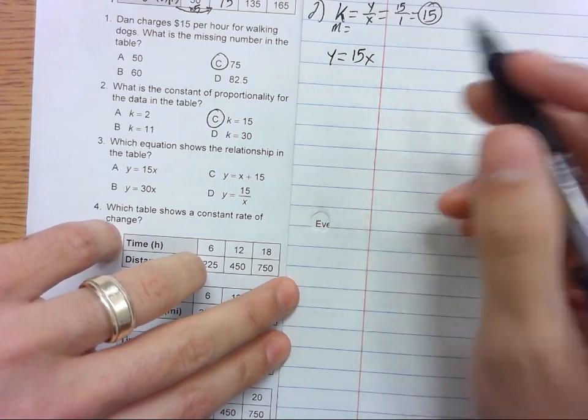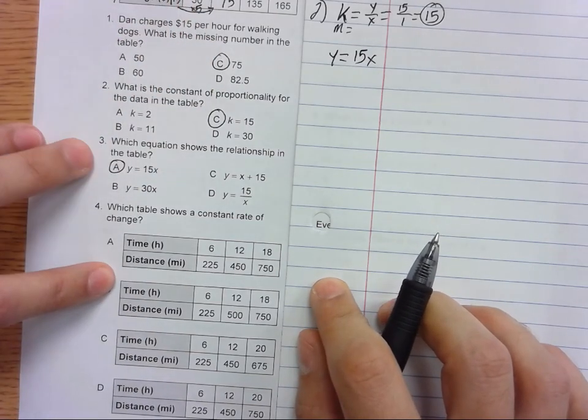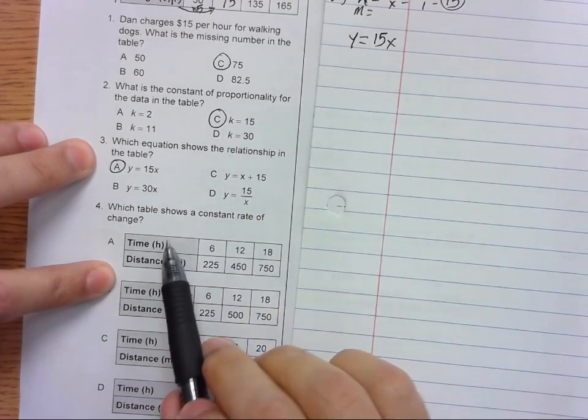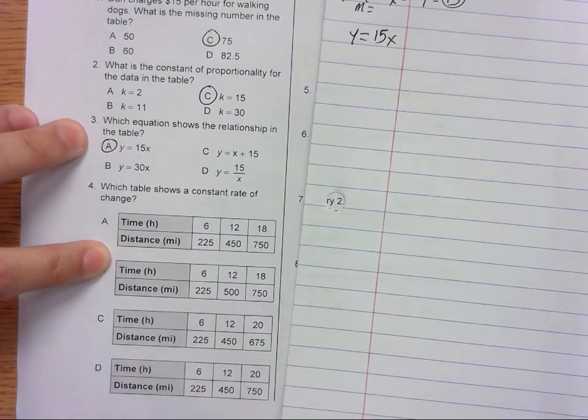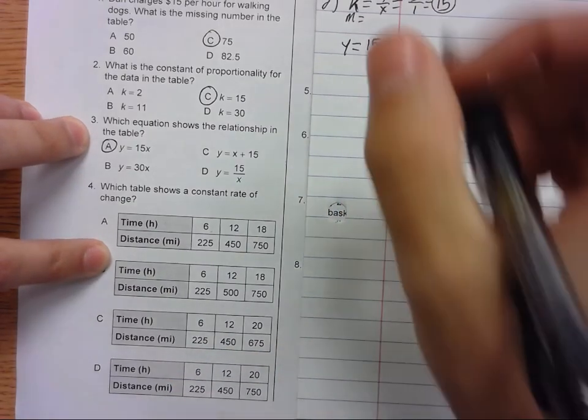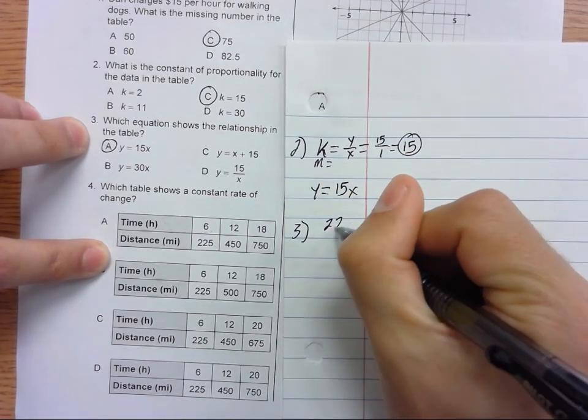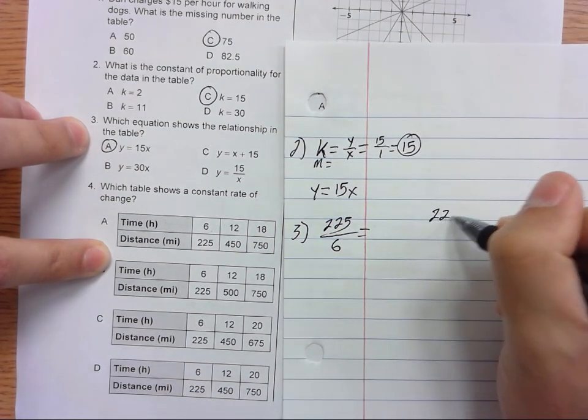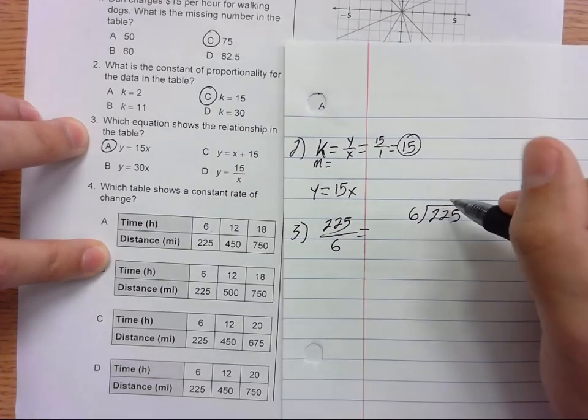Moving on to four: which table shows a constant rate of change? So what is the constant rate of change? Well, here we have time, so this would be X and this would be Y. And all of these first columns are the same, so we know that they all need to be - for constant, we put Y over X. So what is this? Let's go to the side: 225 divided by 6.